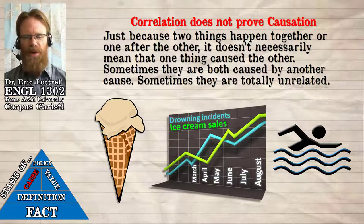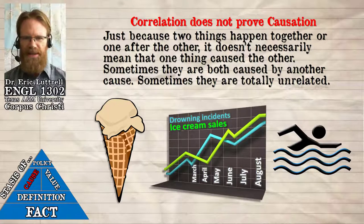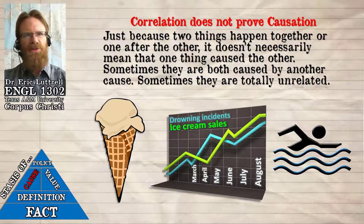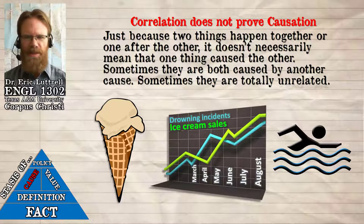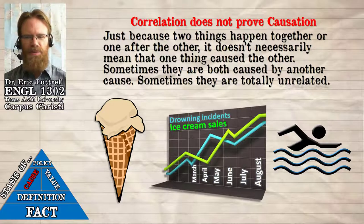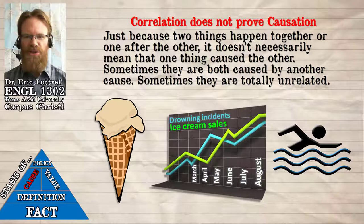Once you think you see a causal pattern, you can come up with explanations and use motivated reasoning to make it seem more likely — maybe people are eating ice cream, then going swimming, getting stomach cramps and drowning. But there's another explanation: maybe one thing isn't causing the other. Maybe both are caused by a third factor not mentioned in either data set — during summer it gets hotter, and that's when you're more likely to eat ice cream and more likely to go swimming. So there might be a correlation, but that doesn't prove causation.